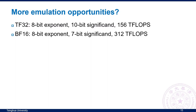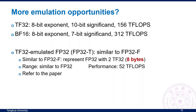Are there more opportunities to use other types for emulation? Besides FP16, A100 also supports TF32 and BF16. TF32 has 8 exponent bits and 10 significant bits with 156 TFLOPs peak performance. BF16 has 8 exponent bits and 7 significant bits with 312 TFLOPs. These types provide a range similar to FP32 but with lower precision. So we can use these types and propose emulated data types with a larger range. We propose TF32-emulated FP32, which we call FP32T. The T-type uses 2 TF32 to represent an FP32 with 8 bytes, achieving a range similar to FP32 with 52 TFLOPs. Please refer to the paper for more details.